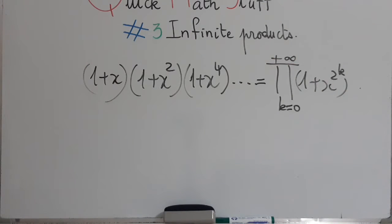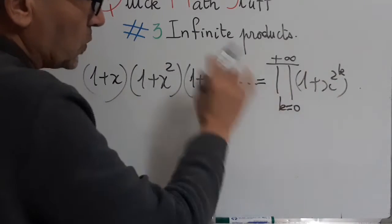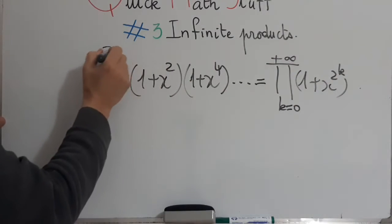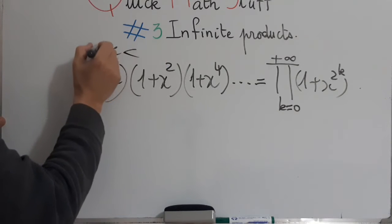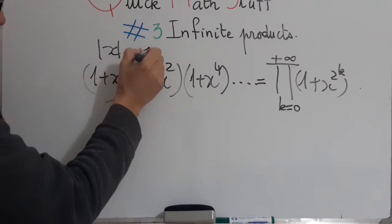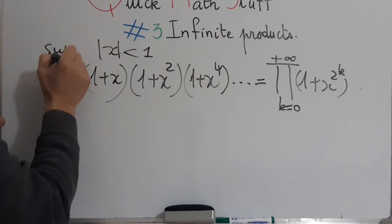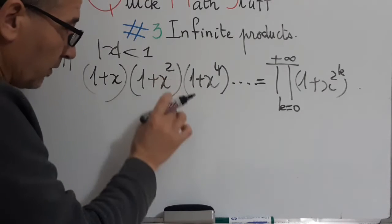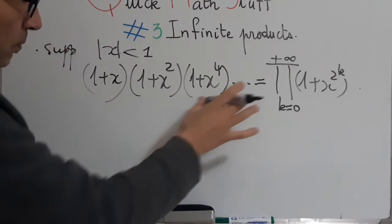Now, recall first why this product will be convergent. Assume that |x| < 1. I remind you the Weierstrass inequality about infinite products.